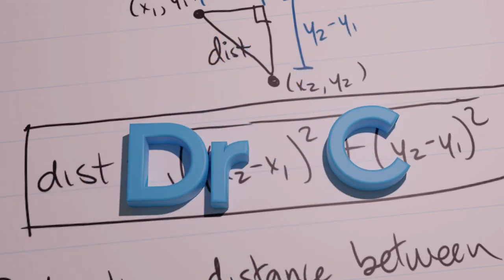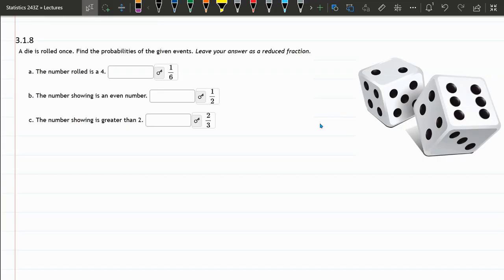So now we're going to roll a dice, and we're going to roll it once, find the probabilities of the given events that I'm showing you the answers to. Let's pretend that they're not here.